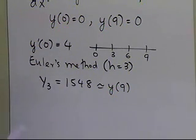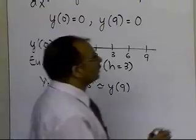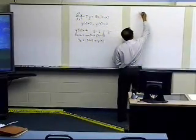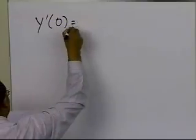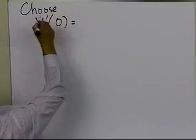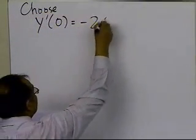What I'm going to do is choose another guess for the slope, and see what kind of values I get for y. I'm going to choose y'(0) equal to -24.